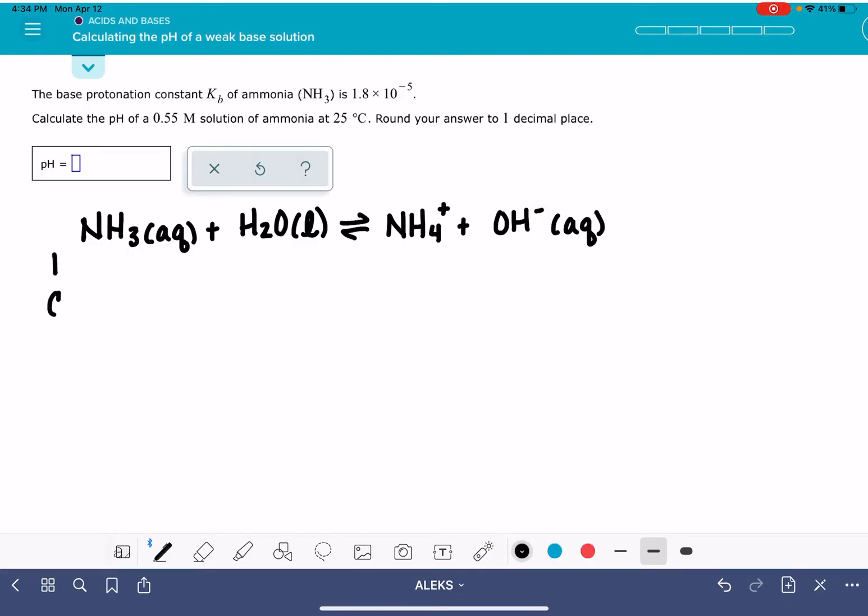We'll use this balanced equation to make an ICE table. The initial concentration of the base is 0.55 molar. Initially, we don't have any products.